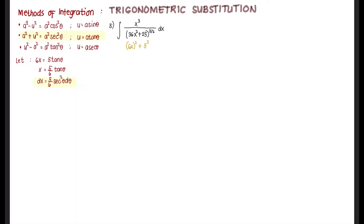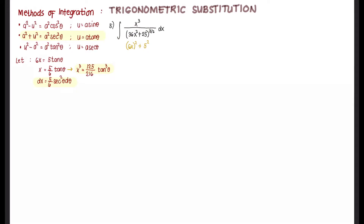We have x³ in the numerator, so raising x = (5/6) tan θ to the power of 3 gives x³ = (125/216) tan³ θ. From the pattern in the denominator, 36x² + 25 = 25 sec² θ, so we now have expressions to replace all parts of the integrand.